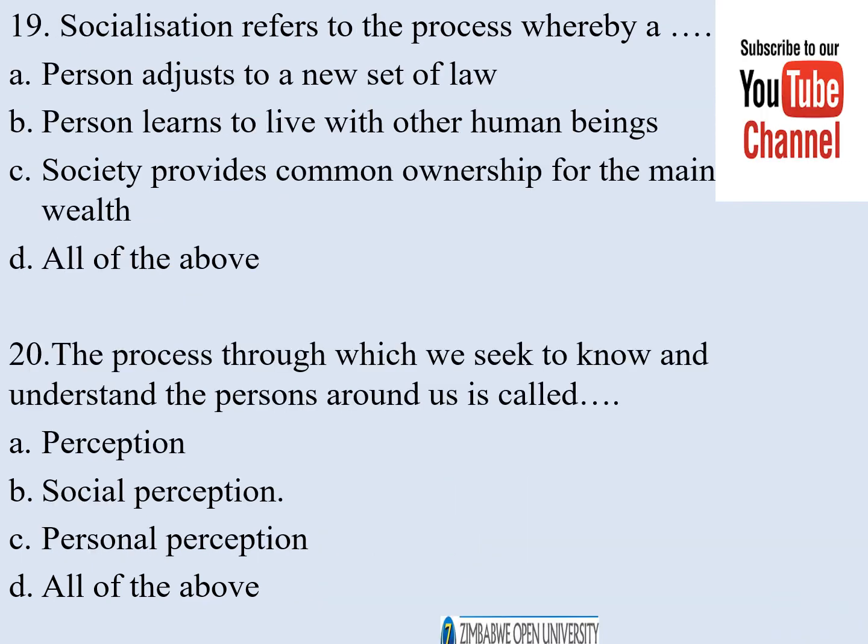Number nineteen. Socialisation refers to a process whereby: a) a person adjusts to a new set of laws, b) a person learns to live with other human beings, c) society provides common ownership for the main forms of wealth, d) all of the above. The correct answer is b.